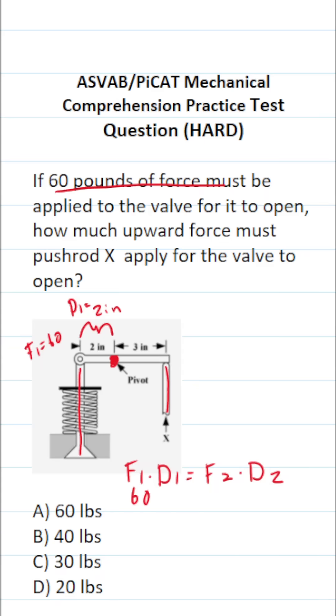So this becomes 60 times 2 equals—what is F2? It's the amount of force this push rod must apply to open this valve. That's actually what we're going to be solving for, so I'm going to say F2 is X.